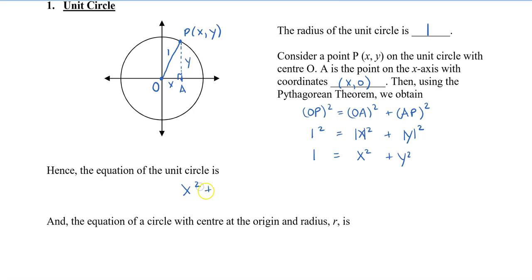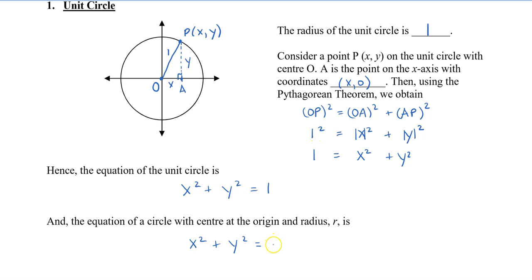If the equation of a circle with the center at the origin has a radius r, instead of making the right side 1 we're going to put r. Remember from earlier it was Pythagoras and it was 1 squared, so this will actually be r squared — giving us x squared plus y squared equals r squared.